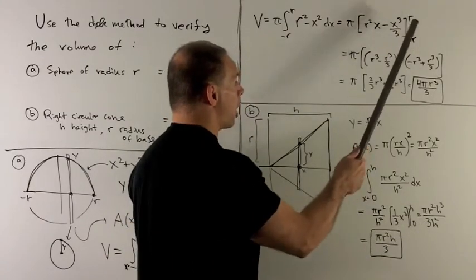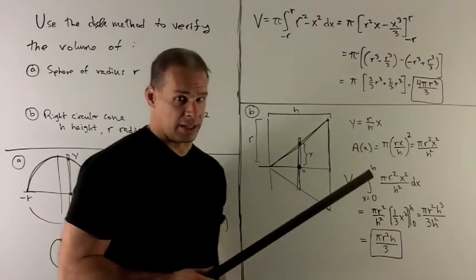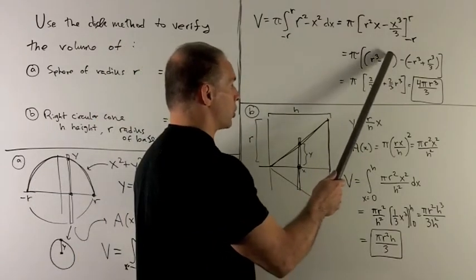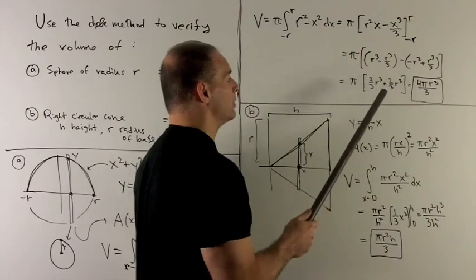Now, I want to evaluate at r and minus r, take the difference. That gives me r-cubed minus r-cubed over three, which is two-thirds r-cubed.